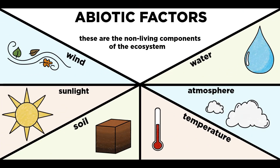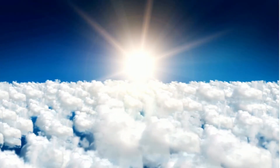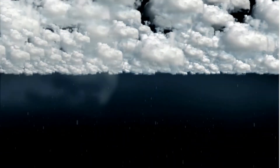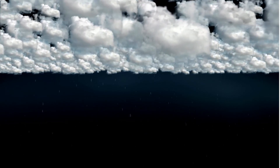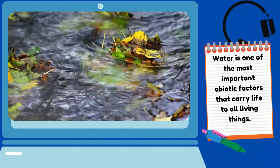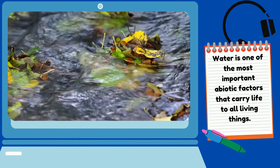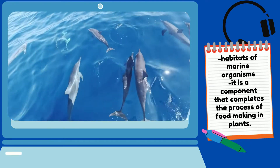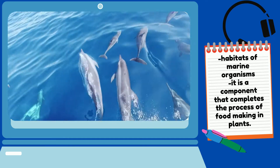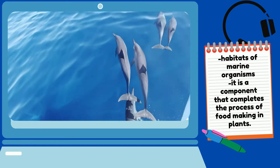The abiotic component of an ecosystem refers to its non-living or physical environment. The physical environment is influenced by different factors such as water, sunlight, oxygen, temperature, soil, air, minerals, and nutrients. Water is one of the most important abiotic factors that carry life to all living things. It covers the largest part of the world such as the ocean, rivers, lakes, and other bodies of water which are considered the habitats of marine organisms. It is a component that completes the process of food making in plants, known as photosynthesis.